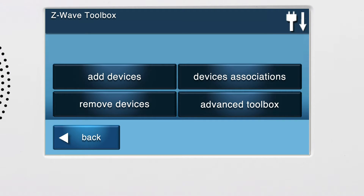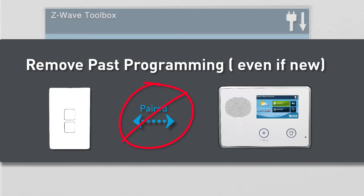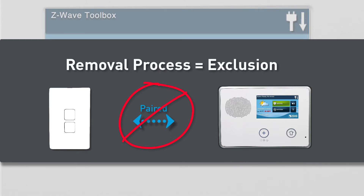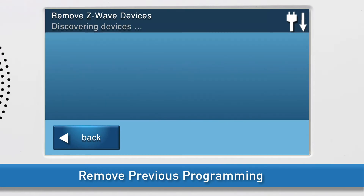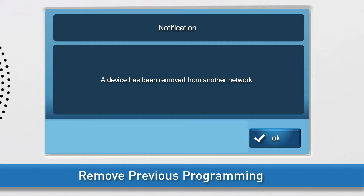You are now in the Z-Wave Toolbox. Z-Wave devices may need to have past programming removed before they can be added to a panel, even if they are new. We do this by performing the removal process, which is also known as exclusion. To begin the removal process, select the Remove Devices button. The Remove Z-Wave Devices screen will appear. Press either the top or bottom button once. You will see a notification on screen that the device was removed. Press OK. Press Back.